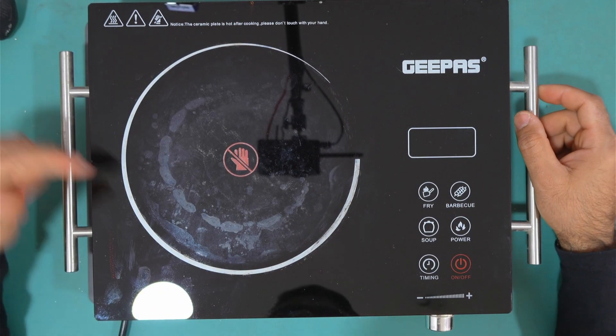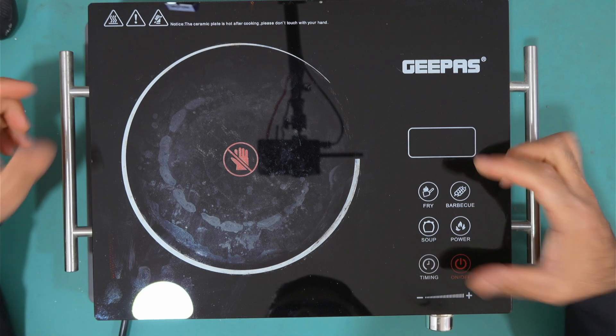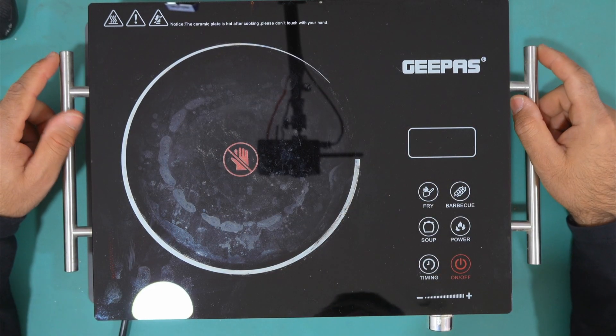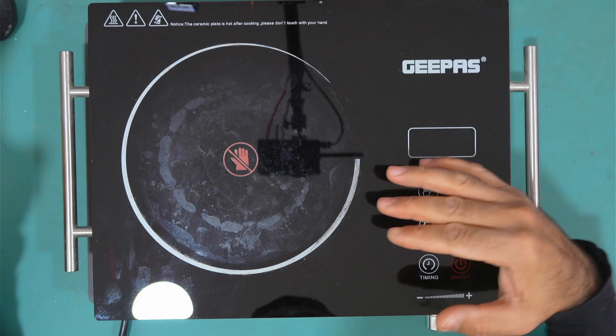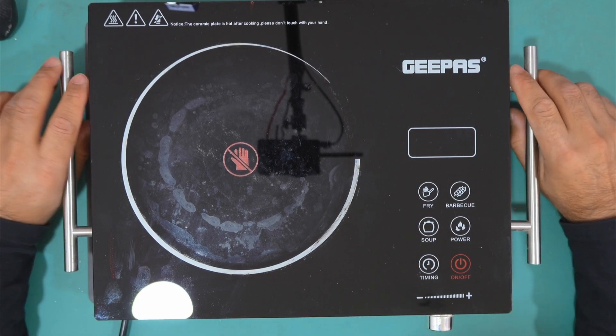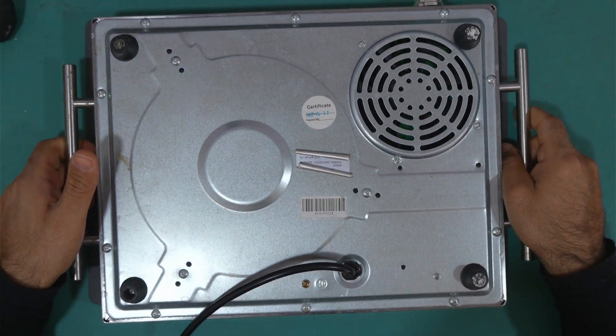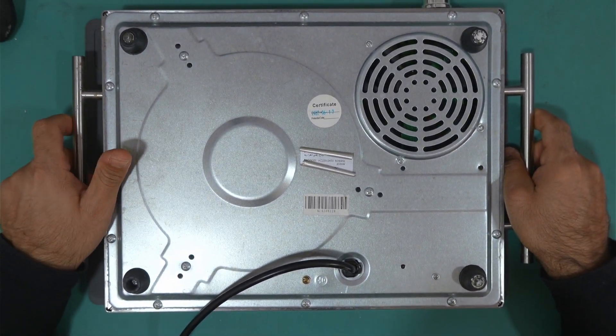It could be the coil, the heating element, or it could be the control circuitry that controls the heating element, so it controls the temperature or the voltage applied to the heating element. Let's take it apart and see if we can sort out what's causing this issue.